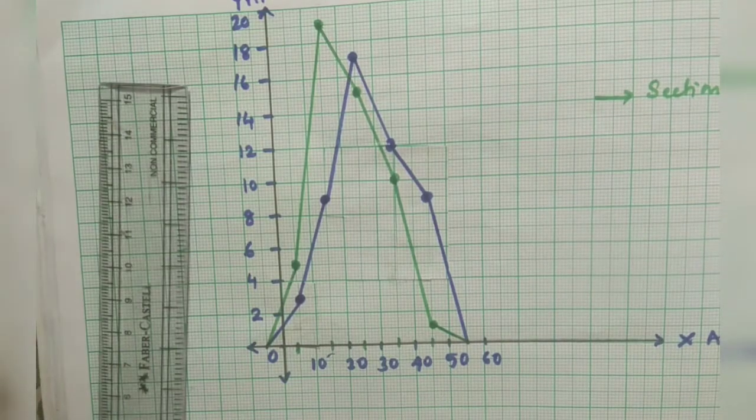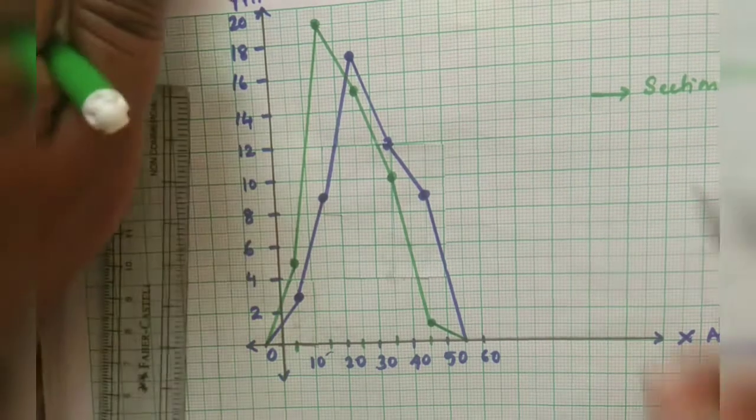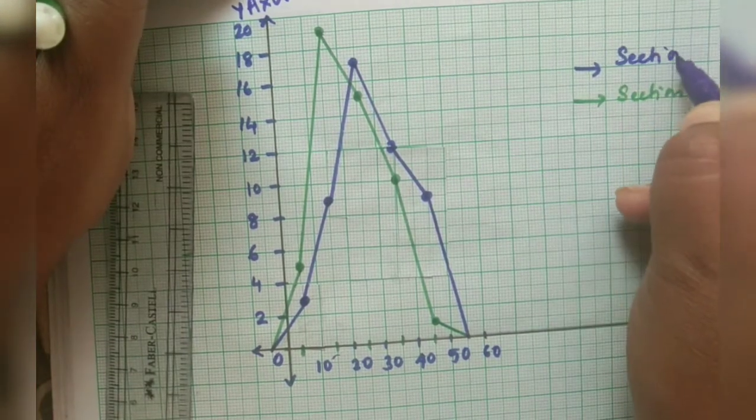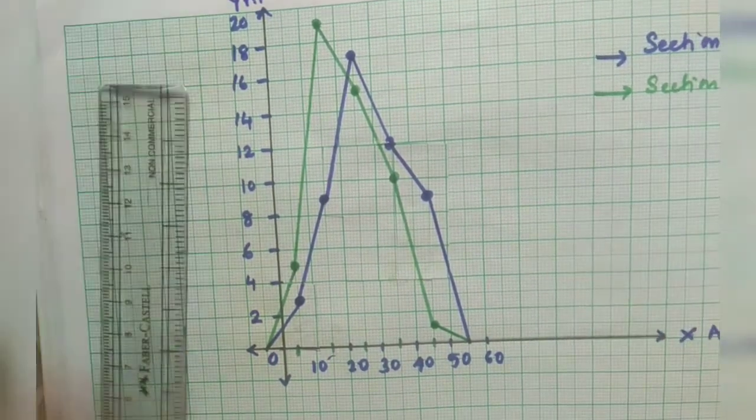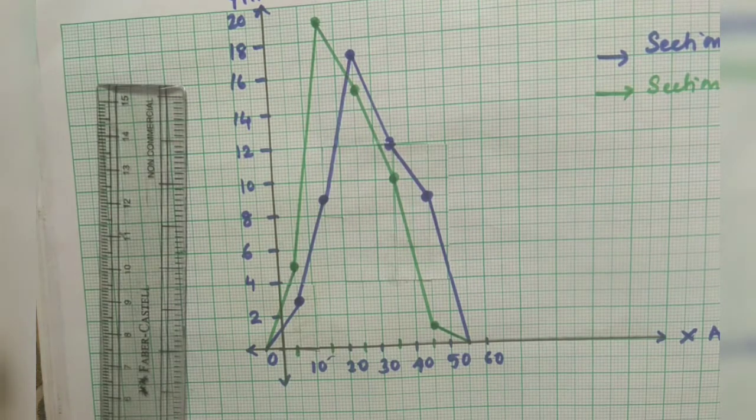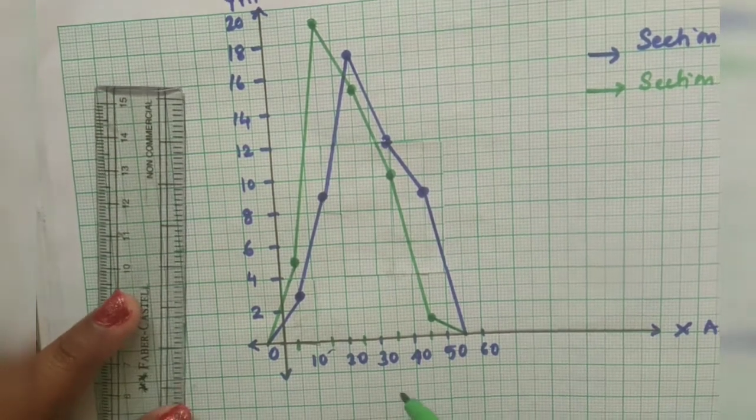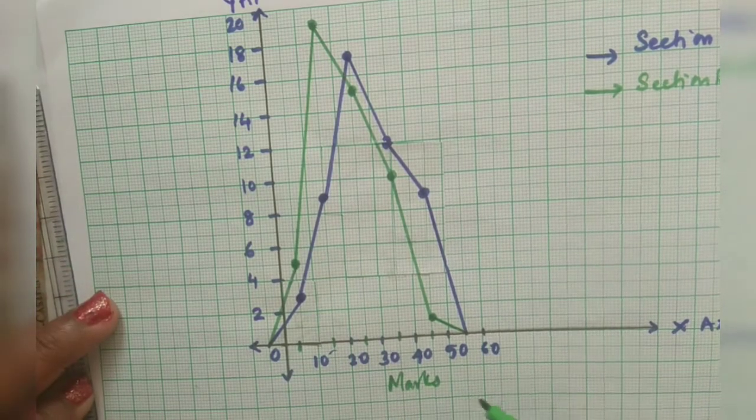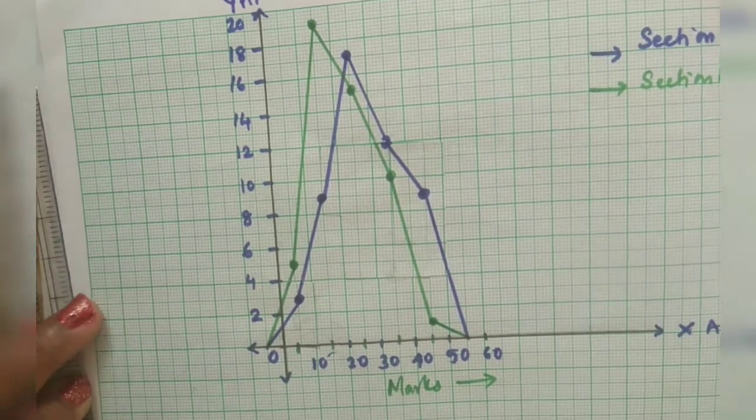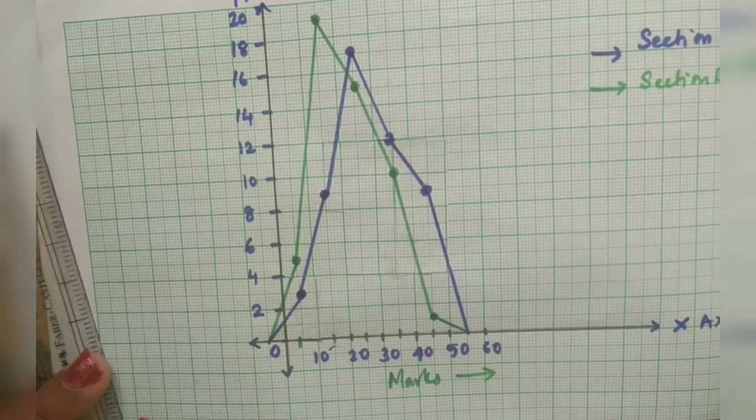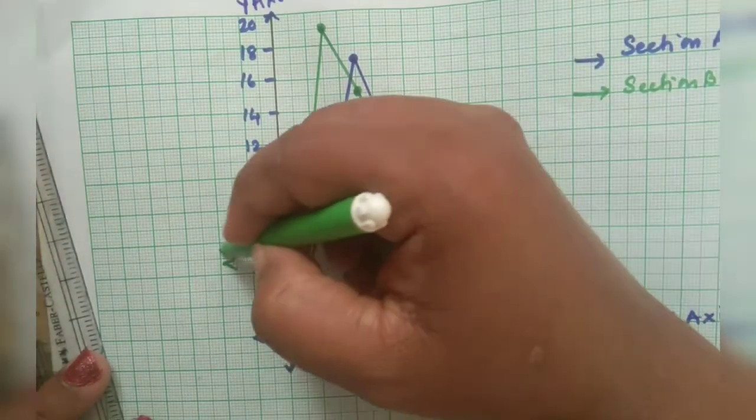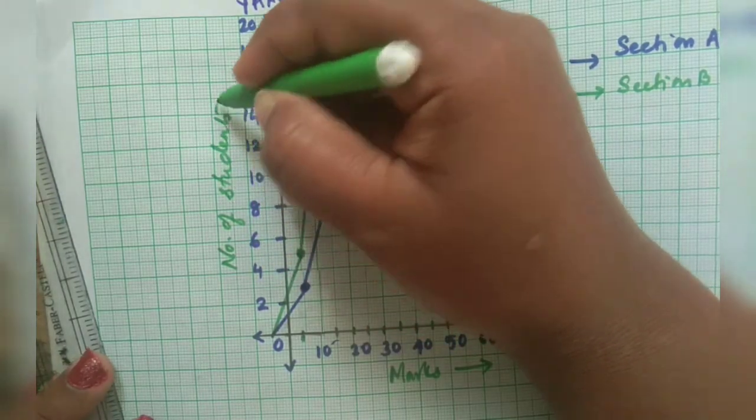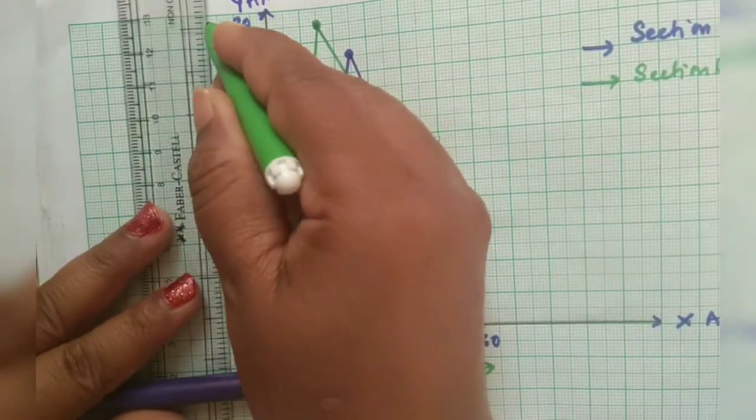You can just represent that green lines represent for the section B and the purple line represents for the section A. And now you have to write down what you have taken along the x axis, that is marks is taken along the x axis. And what you have taken along the y axis, that is the number of students is taken along the y axis.